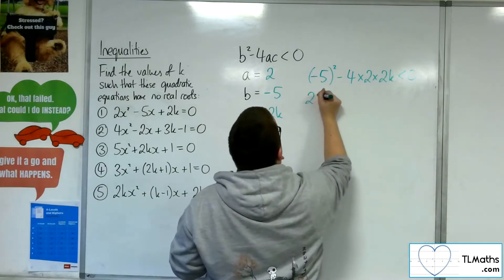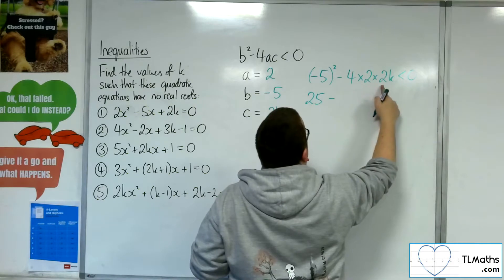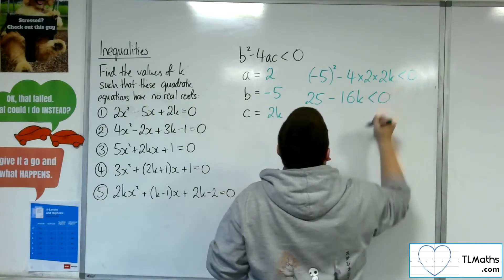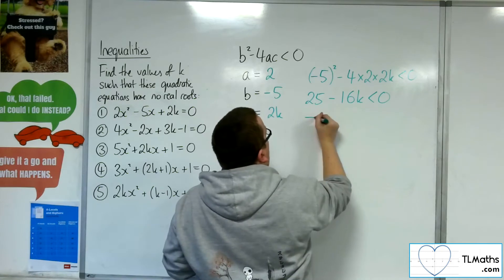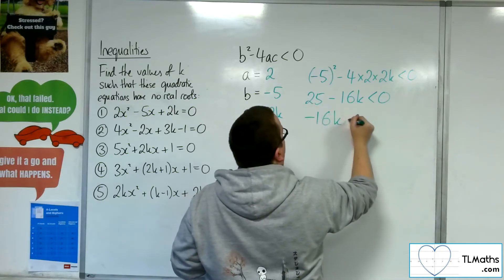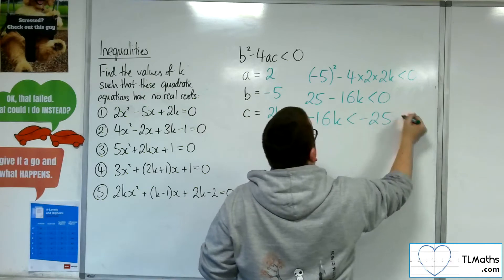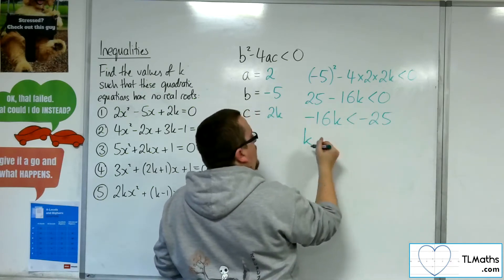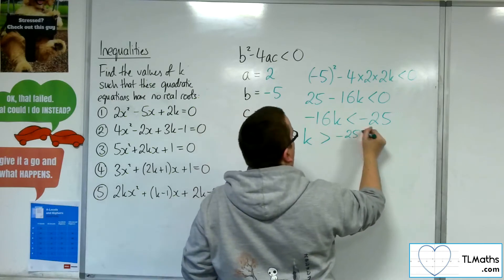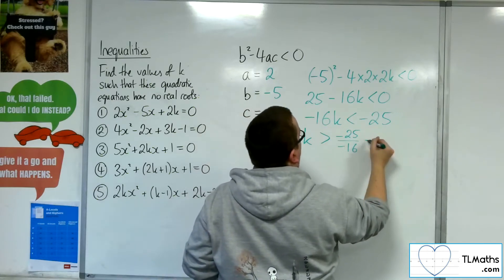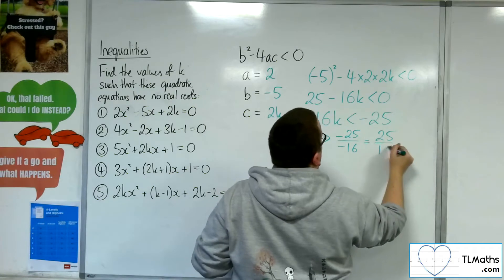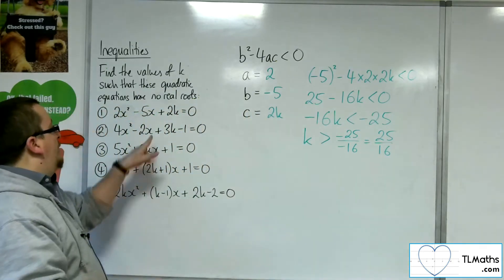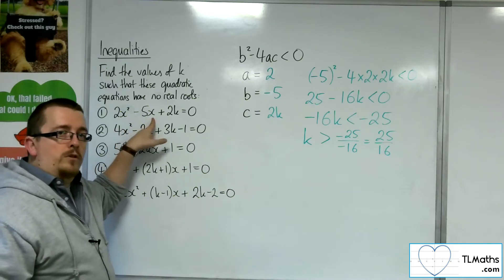So we're going to have 25 take away — well, 4 lots of 2 is 8, times 2k is 16k. So 25 take away 16k has got to be negative. Take the 25 from both sides, then divide both sides by minus 16, and we get k greater than minus 25 over minus 16, so 25 sixteenths. So k has got to be greater than 25 sixteenths in order for that quadratic equation to have no real roots.